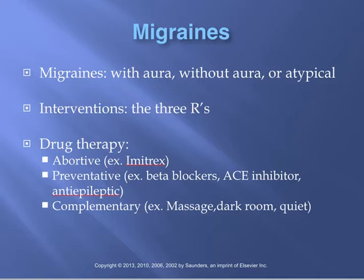For migraines, there are three R's: recognize what it is, respond and get help by seeing the physician, and relieve the pain and associated symptoms. There are three main types of therapy. The first is abortive therapy, which relieves symptoms during the aura phase or very shortly after migraine pain has started. Pain interventions frequently include NSAIDs such as Toradol, and antiemetics like Reglan or Zofran to treat nausea.